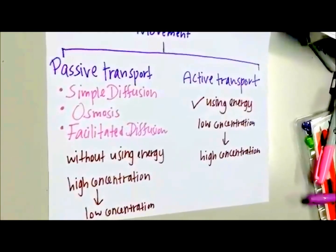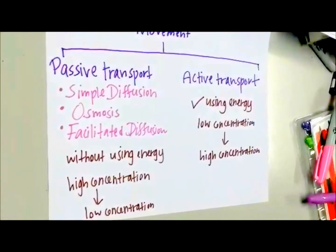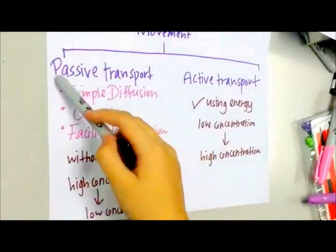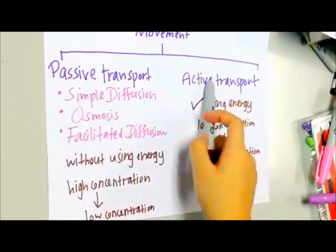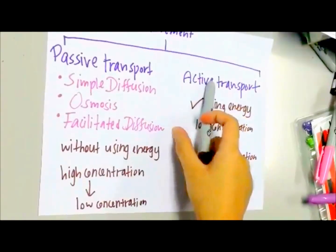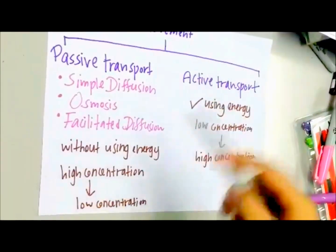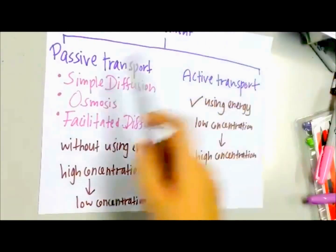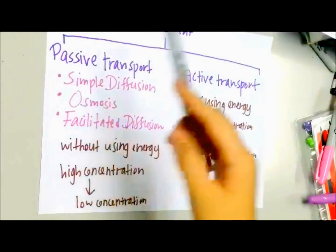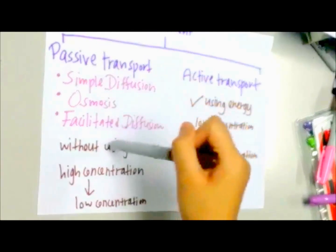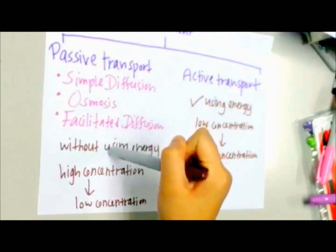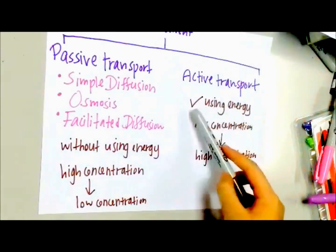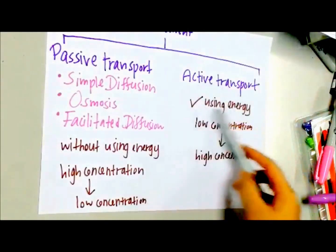There are two types of movement of substances across the plasma membrane. One is known as passive transport while the other one is active transport. Passive transport is the movement of molecules without using energy, but active transport is the movement of molecules using energy.